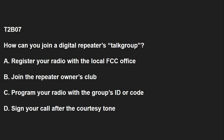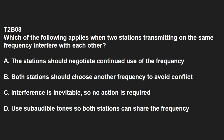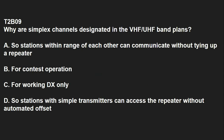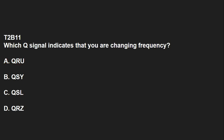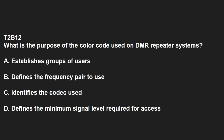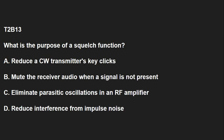T2B07: How can you join a digital repeater's talk group? Program your radio with the group's ID or code. T2B08: Which of the following applies when two stations transmitting on the same frequency interfere with each other? The stations should negotiate continued use of the frequency. T2B09: How are simplex channels designated in the VHF/UHF band plans? So stations within range of each other can communicate without tying up a repeater. T2B10: Which Q signal indicates that you are receiving interference from other stations? That would be QRM. T2B11: Which Q signal indicates that you are changing frequency? That is QSY. T2B12: What is the purpose of the color code used on DMR repeater systems? It establishes groups of users. T2B13: What is the purpose of a squelch function? Mute the receiver audio when the signal is not present.